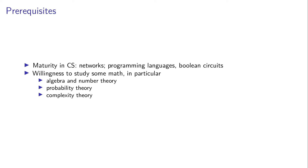What are some prerequisites? We assume some maturity in computer science and a general understanding of networks, programming languages, and Boolean circuits. You should not be too afraid of mathematics — there is no way you can understand this whole area if you are reluctant to study some math topics. There will be some algebra and some number theory, and there are also connections to probability theory, though that's very light, and some complexity theory.